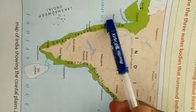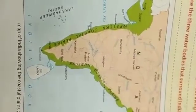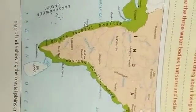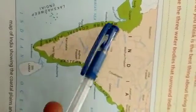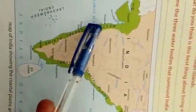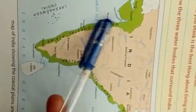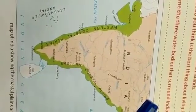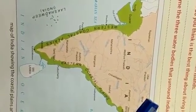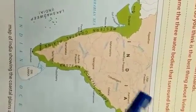This coast is very narrow — it does not have much width and it is also full of rocks. That is why the government has built lighthouses to warn ships that there are rocks and it is not safe to come near the coast.